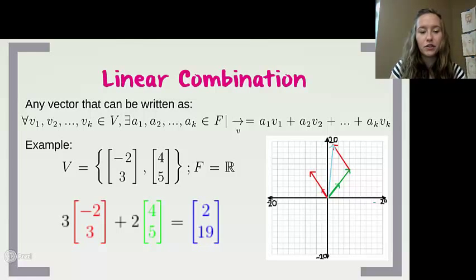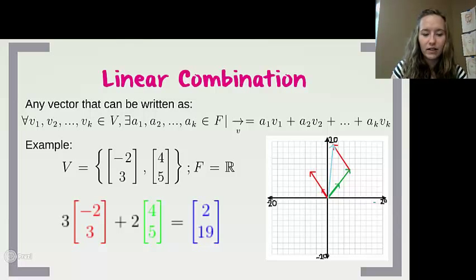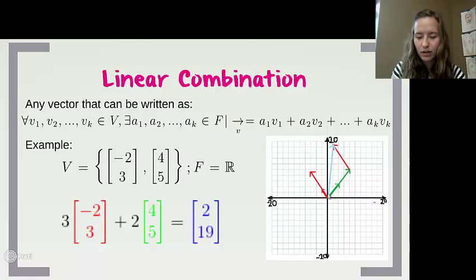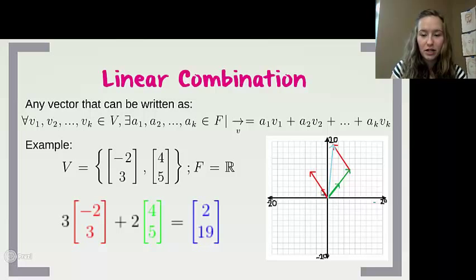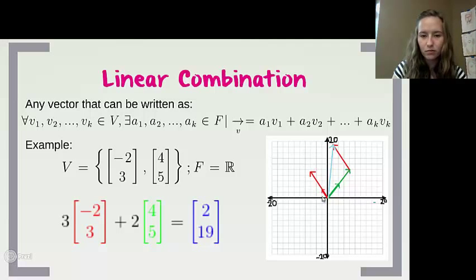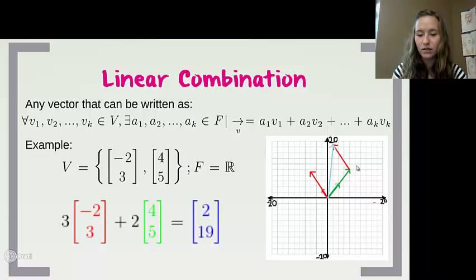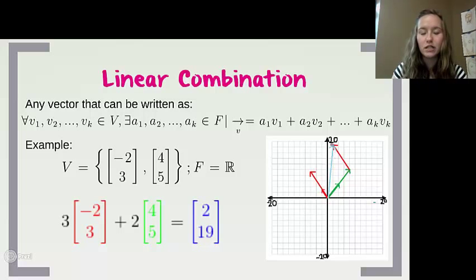We'll take the set of vectors {(-2, 3), (4, 5)} over the field of real numbers. The vector (-2, 3) is shown as a red arrow and (4, 5) as a green arrow. Using scalar multiplication, I do 3 × (-2, 3) to get the long red vector, and 2 × (4, 5) to get the long green vector. Then using vector addition, I get the blue vector (2, 19).